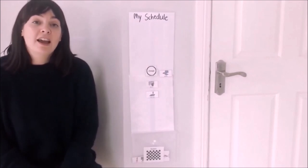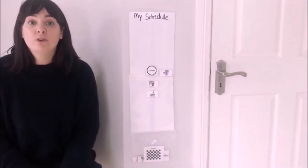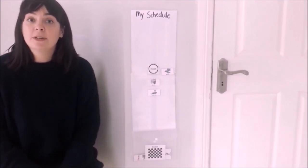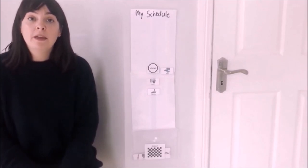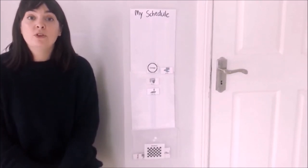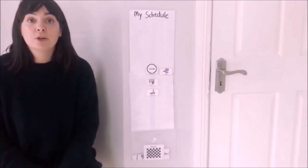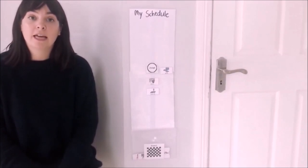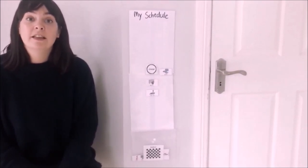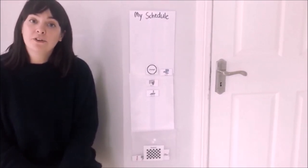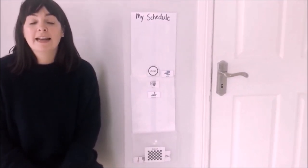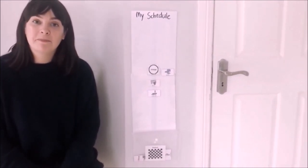There will be times when you find out right before the activity that there's going to be a change — the same thing applies, still put on the change card and put the replacement activity on. For larger life changes you know are upcoming, for example a transition to a different school, a new baby, or moving house, you could use a social story to help your child prepare. In the final slide there is a link to further information on social stories, how to write them and how to implement them.